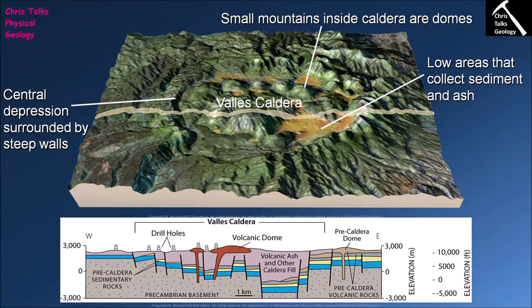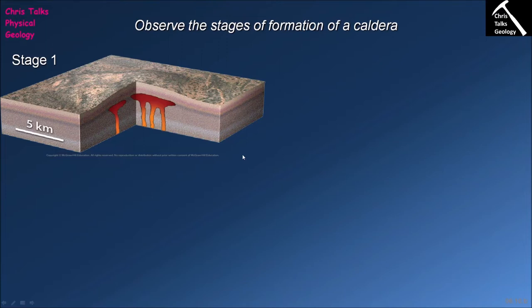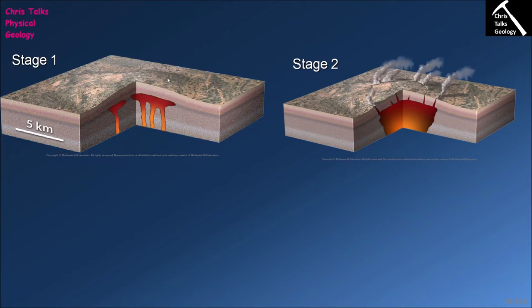How do calderas form? In stage one, felsic magma builds up in the subsurface forming a magma chamber, created by the melting of continental crust. This buoyant, hot magma wants to rise but is blocked by overlying rock layers, so it causes those layers to dome upward. Over time, this doming stresses the rock to the point of failure, forming joints and faults, which become the perfect conduits for magma to move along.